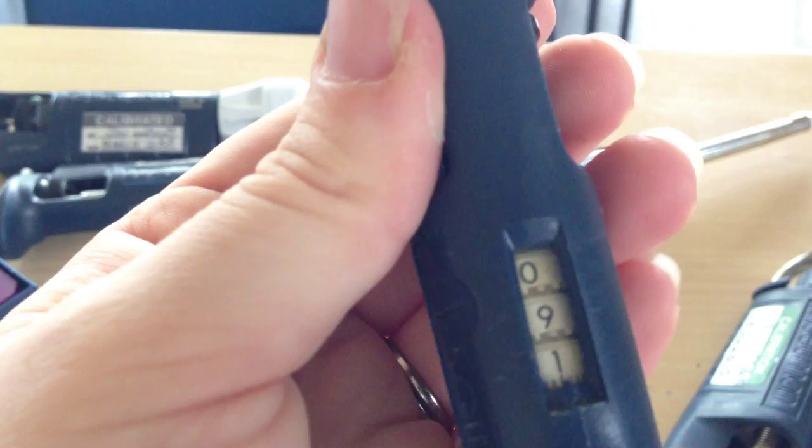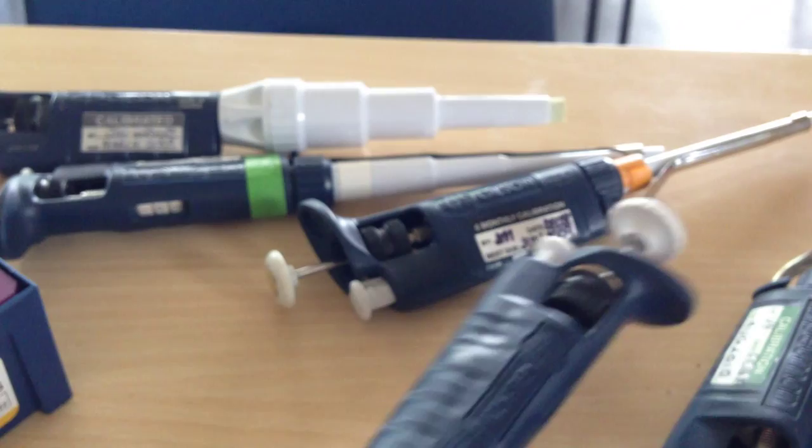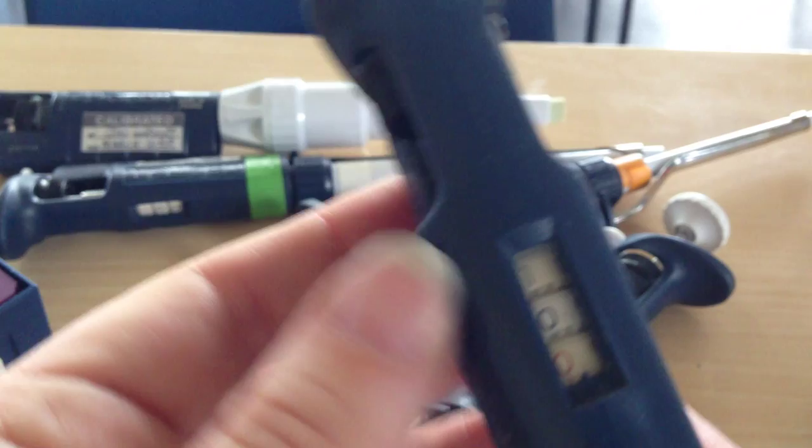So if we watch this as I change it around you can see the numbers go down. So if I set it to 91 that is 91 microliters. If I set it to 70 that is 70 microliters.